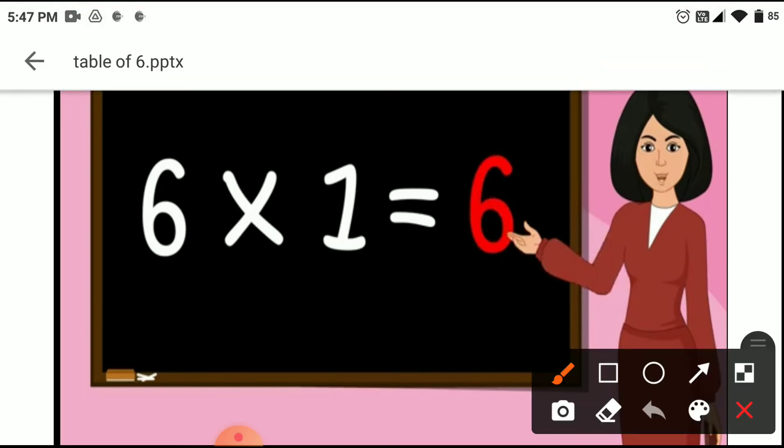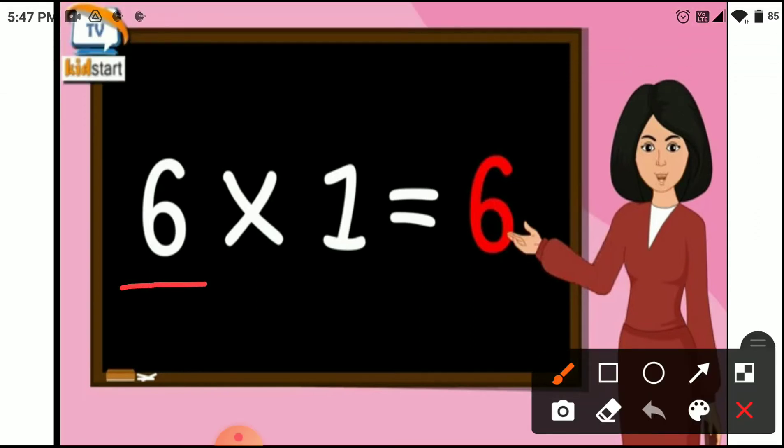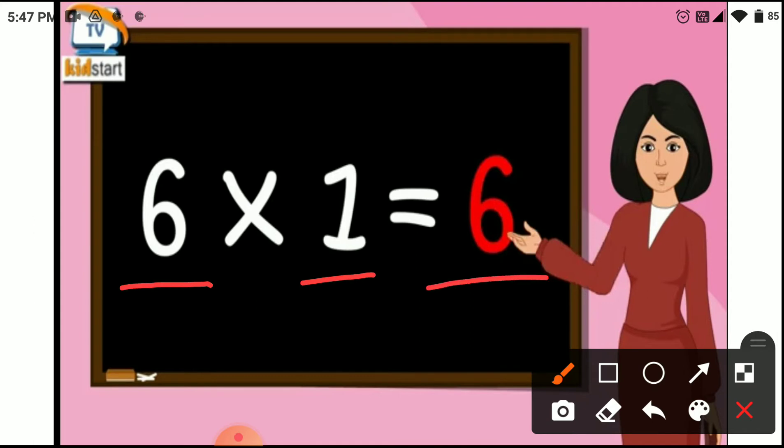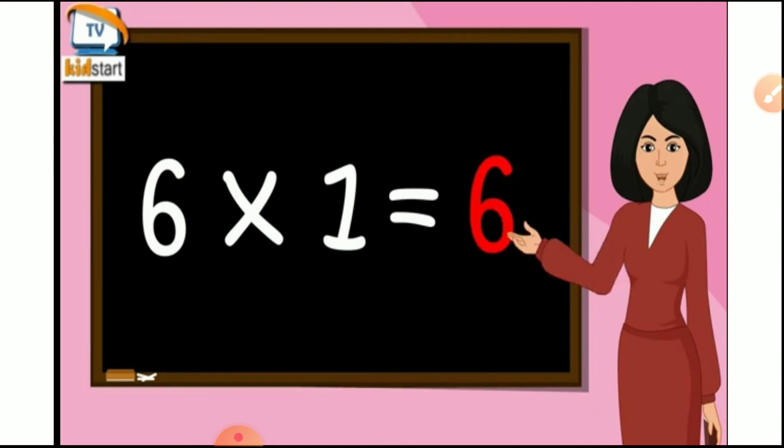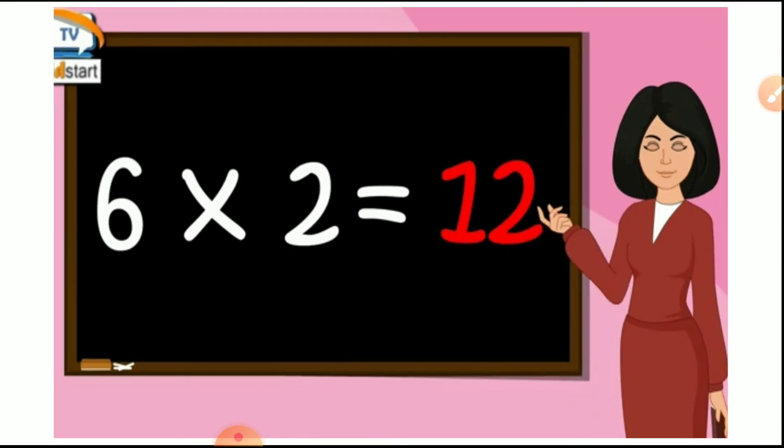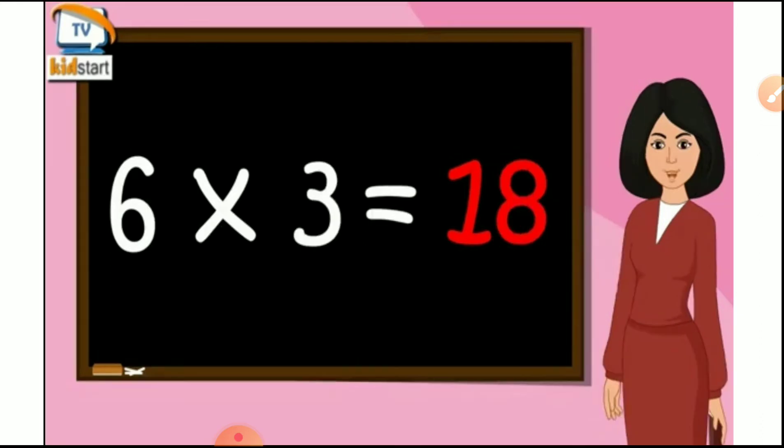Now, 6 1s are 6, 6 2s are 12, 6 2s are 12, 6 3s are 18, 6 3s are 18.